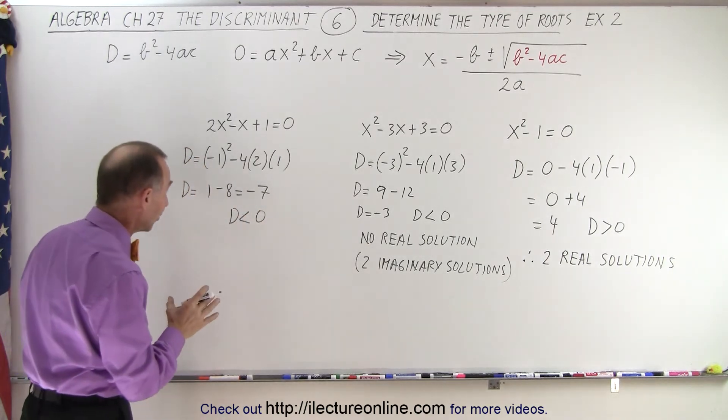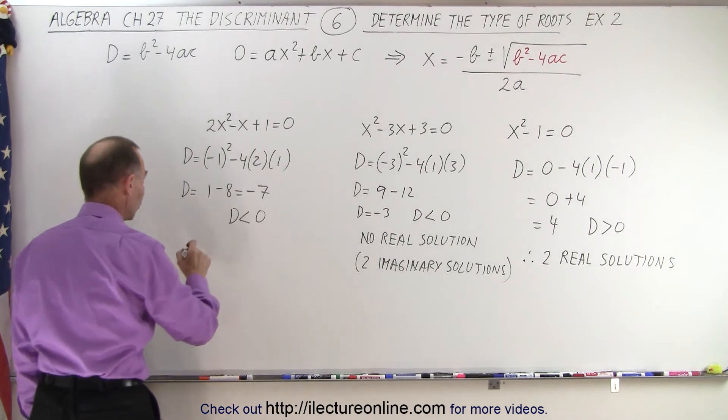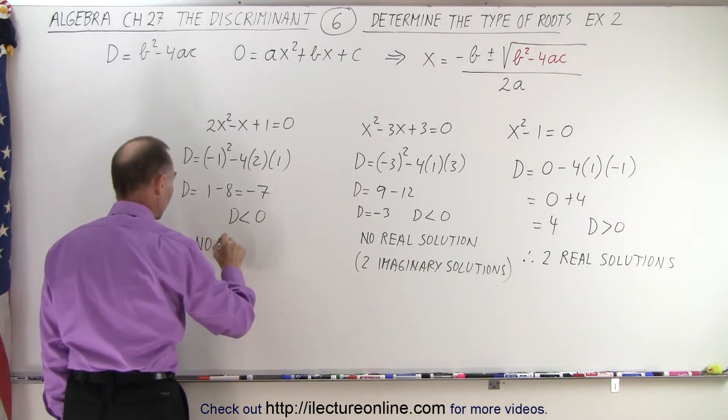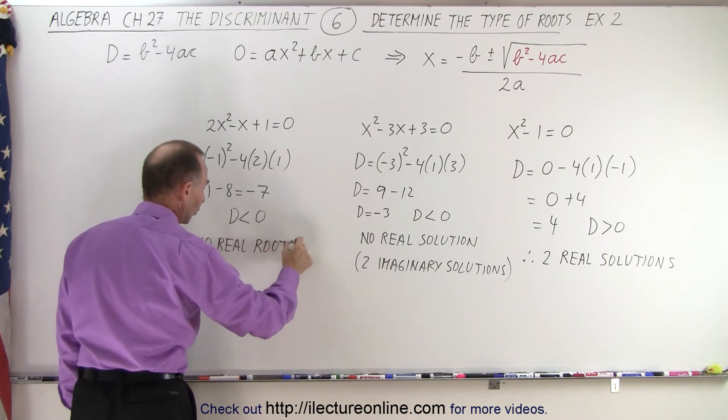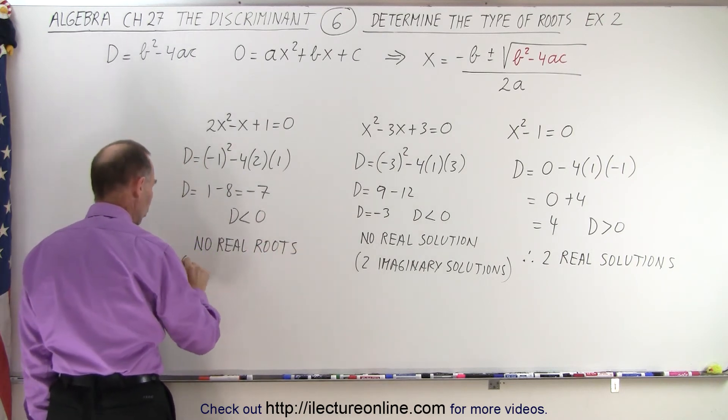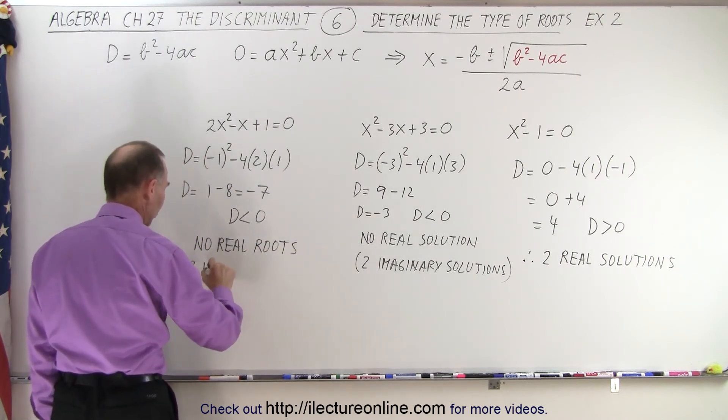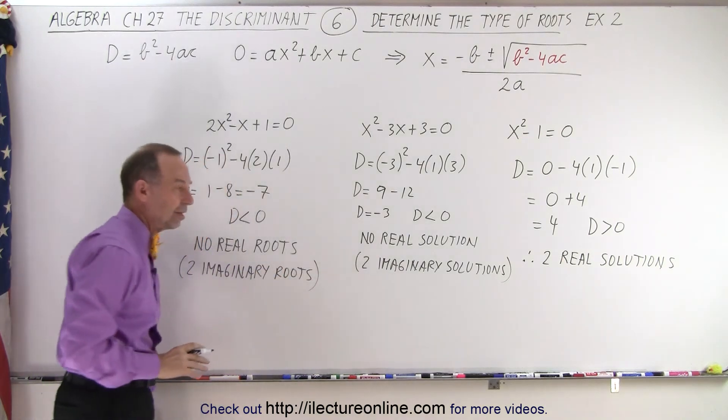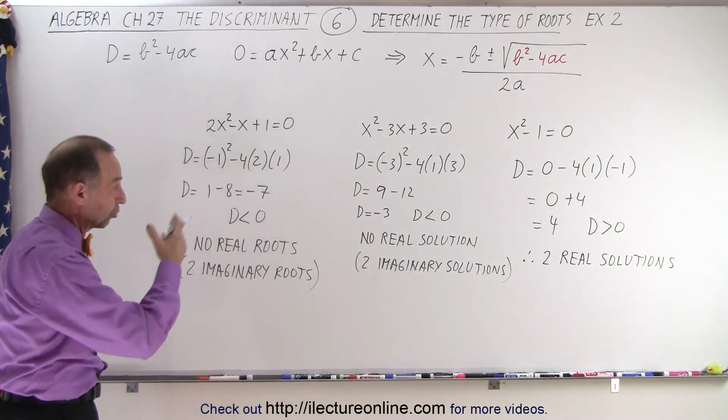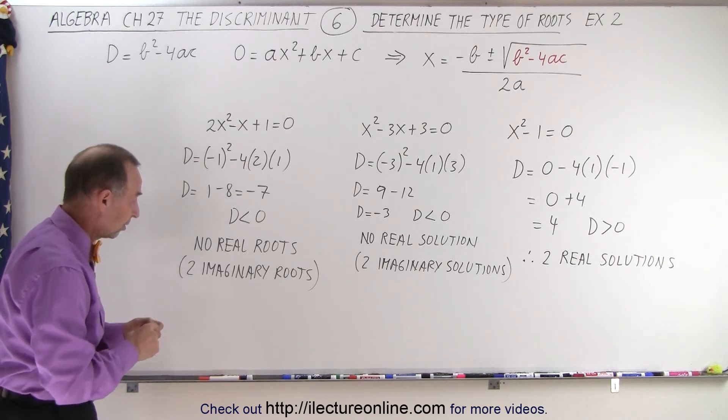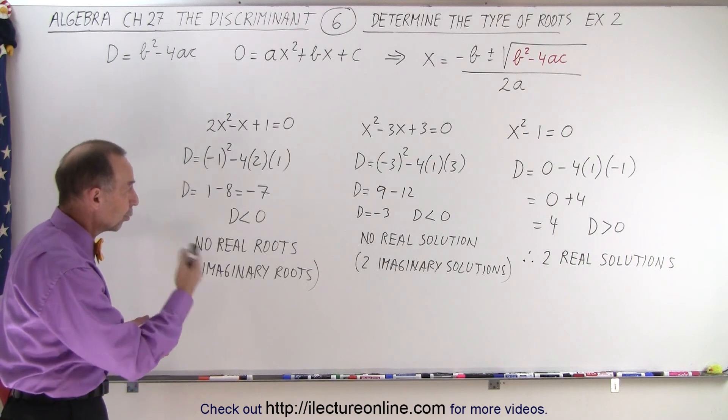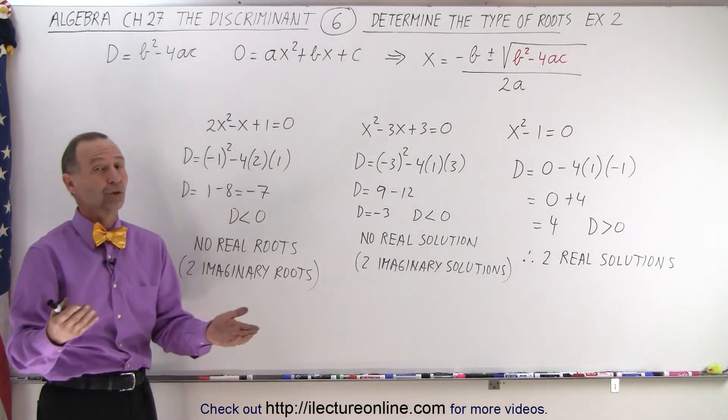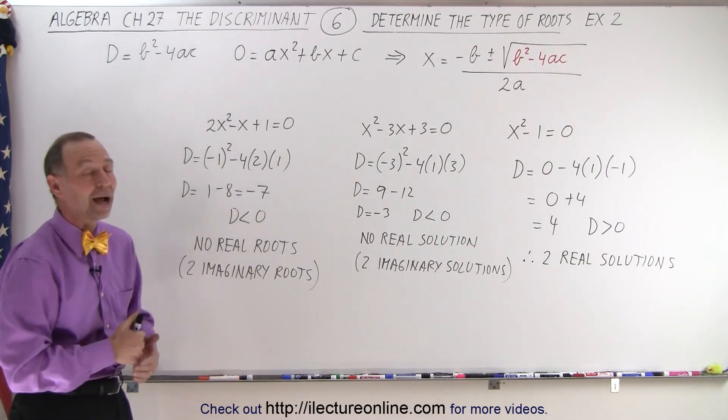So again, you can see that this tells us there are no real roots, or no real solutions, and two imaginary roots. So here you can see, we can interchange the word solutions or roots. There's a solution to the quadratic equation. There's a root to the quadratic equation. It's either real or imaginary, either two or one. And that is how it's done.